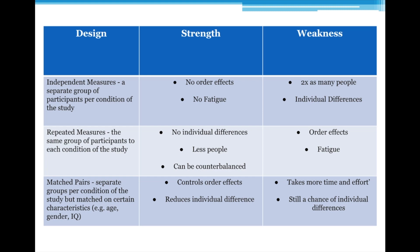Think about the Loftus and Palmer study. If you've looked at memory, you'll be aware of it. There was a study where they got participants to look at a car crash, and then afterwards asked them how fast the car was going. There were five levels of the IV: hit, bumped, smashed, contacted, collided. They had a different group of participants per verb that was used. So that would be a good example of an independent measures design where you've got more than two groups.